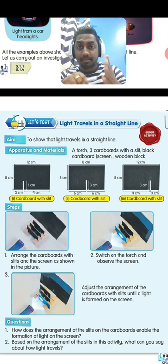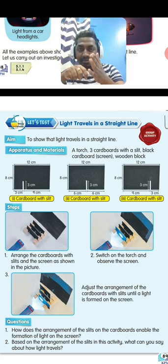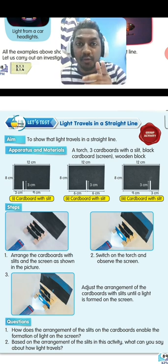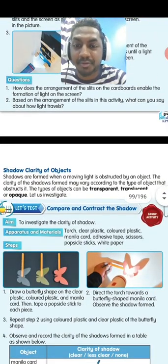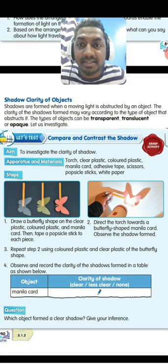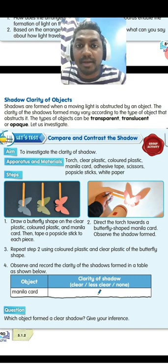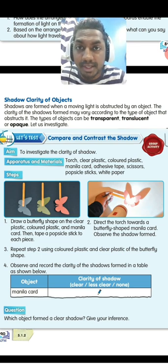When light is blocked by an opaque object, it cannot penetrate, so a shadow is formed. You can see your own shadow as well. Shadows are formed when light is obstructed by an object. The clarity of the shadow formed may vary according to the type of object that obstructs the light.